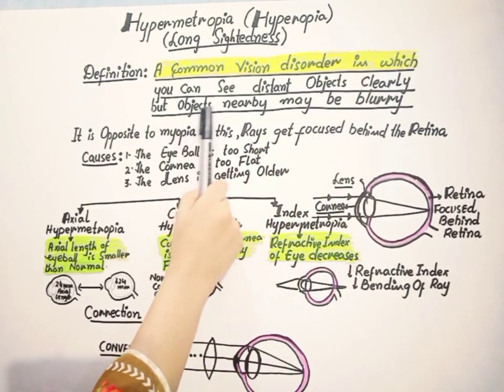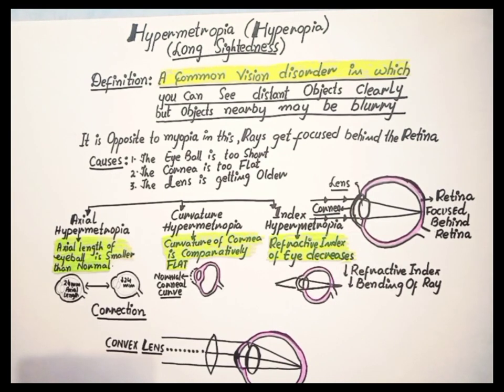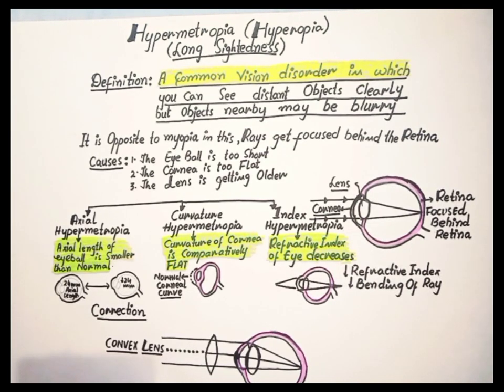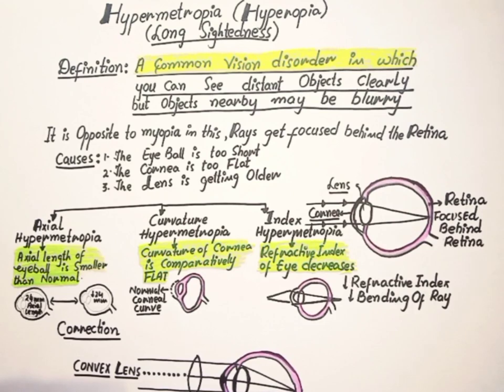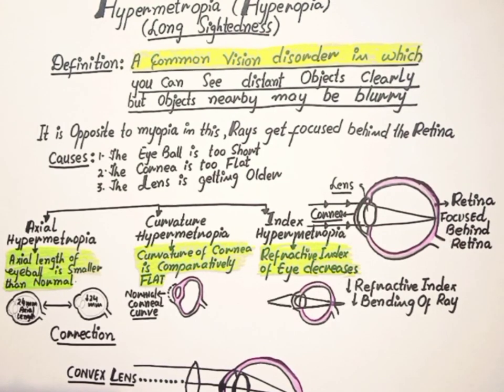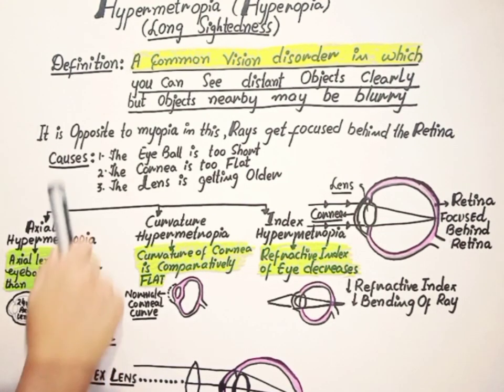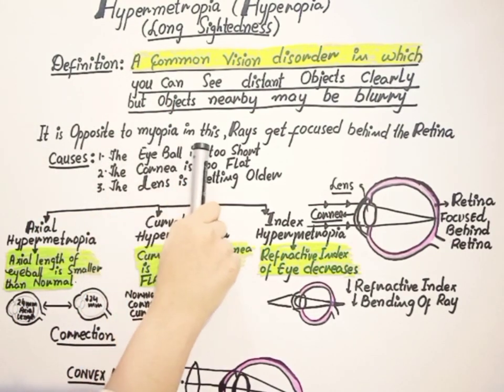But the objects nearby may be blurry. This hypermetropia is a condition of eye where distant objects are seen very clearly but near objects appear blurred. And this blurred effect is due to incoming light being focused behind instead of on the retina wall due to insufficient accommodation by the lens.